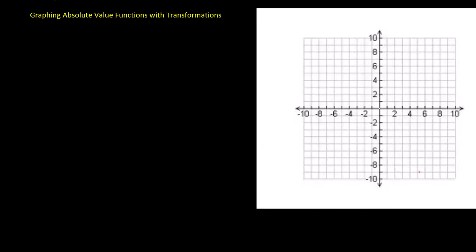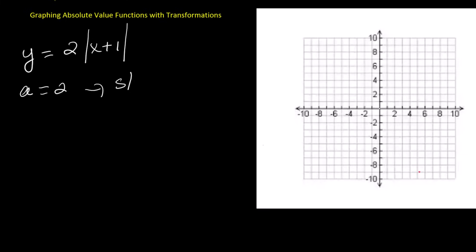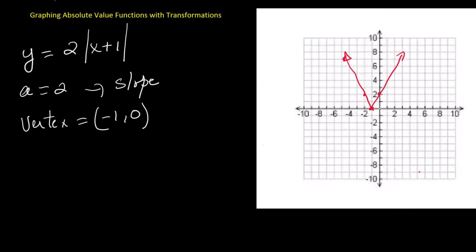Now let's look at how changing the value of a affects the absolute value graph. Suppose we graph 2 times the absolute value of x plus 1. Here, the vertex is at negative 1 comma 0. Because a equals 2, the slope is 2. That means the sides of the V are steeper, and the graph looks narrower compared to the parent function.